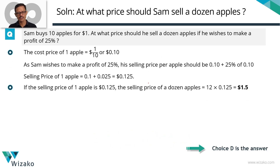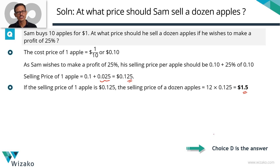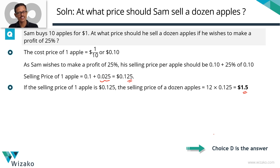To quickly recap: making a 25% profit on the cost gives a profit of $0.025. The selling price of one apple is $0.125. The selling price of a dozen apples — which is what the question asks — is $1.50. Choice D is the answer. So I reiterate: do the math, and before you mark the answer, revisit the question. Check what the question is asking. If it asks for a dozen, compute that and then mark the answer.